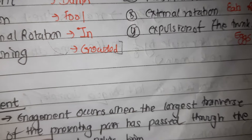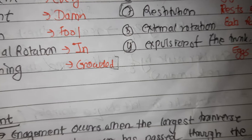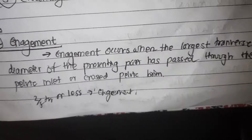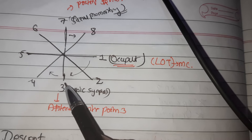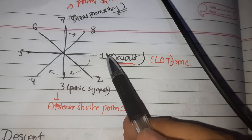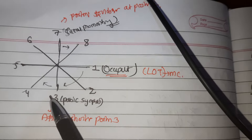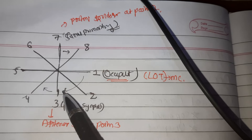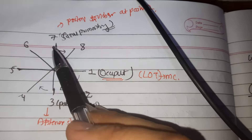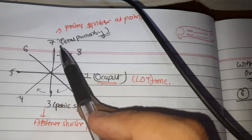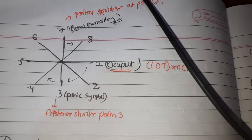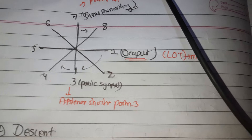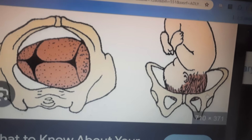In primigravida, engagement occurs in a significant number of cases before the onset of labor, while in multipara the same may occur in the first stage with rupture of the membranes. Looking at a simplified diagram of the pelvic inlet: the pubic symphysis is anteriorly, the sacral promontory posteriorly, and the anterior and posterior iliac spines on the sides. The head lies in the left occipital transverse position — the most common — and we can number the positions one through eight around the pelvis.